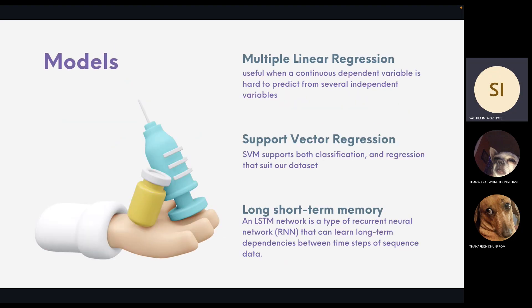And next is a machine learning model that we implemented for our project. There are three models used here, which is multiple linear regression, support vector machine, and long short-term memory. Multiple linear regression is best suited when a continuous dependent variable is hard to predict from several independent variables. Therefore, this model is one of our choices that can support our machine learning. The second one is support vector machine. This model can support both classification and regression problems, so we think that our dataset can be suited to this model. We will use support vector regression to be our second model.